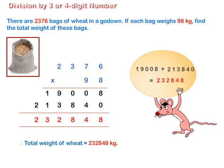Therefore, total weight of wheat is 232848 kg.